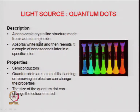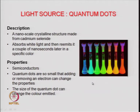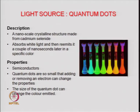Cadmium selenide is a semiconductor. Quantum dots are typically semiconductors and they are so small that by adding or removing one electron you can change their properties, because their properties depend on very few electrons. You can tune their properties very minutely, and one way to tune the properties is by changing the size of the quantum dot and obtaining a variation of colors. This is one of the most important and simple properties visible in a nanomaterial — a change in optical properties as a function of size.